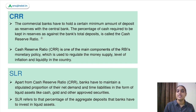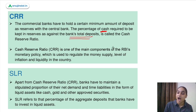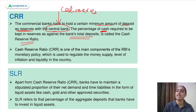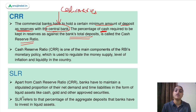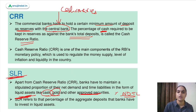The basic difference: CRR is a percentage of net demand and time liabilities to be kept in the form of cash with RBI. That percentage of cash required to be kept as reserves with RBI is called the Cash Reserve Ratio. SLR is that percentage of NDTL which is to be kept in the form of liquid assets — cash, gold or approved securities — with the banks themselves. That percentage is called SLR, the Statutory Liquidity Ratio.